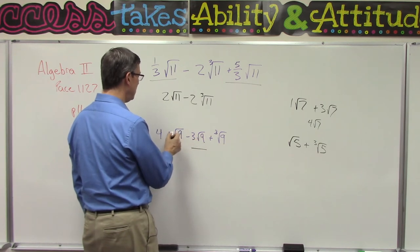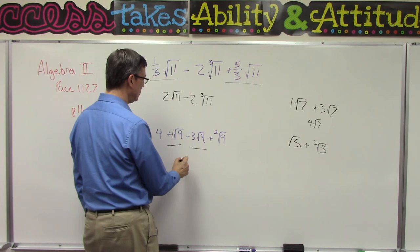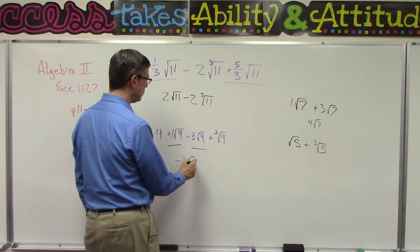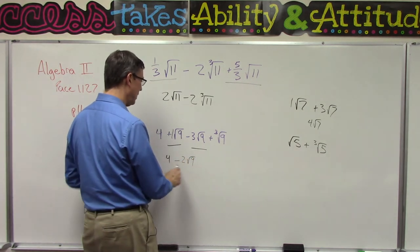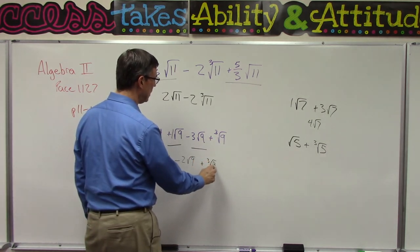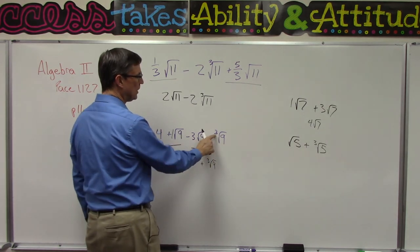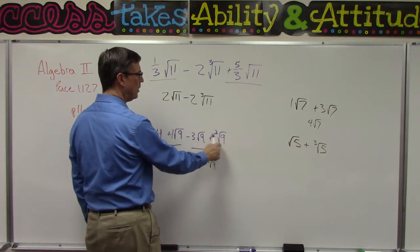This is like positive one plus negative three, so you get negative two square root of nine. We have a four out front, and then this is plus the third root of nine. Now can I simplify this or is this the same as this? No, because of this index of three on this radical, it's not a like term with these two.